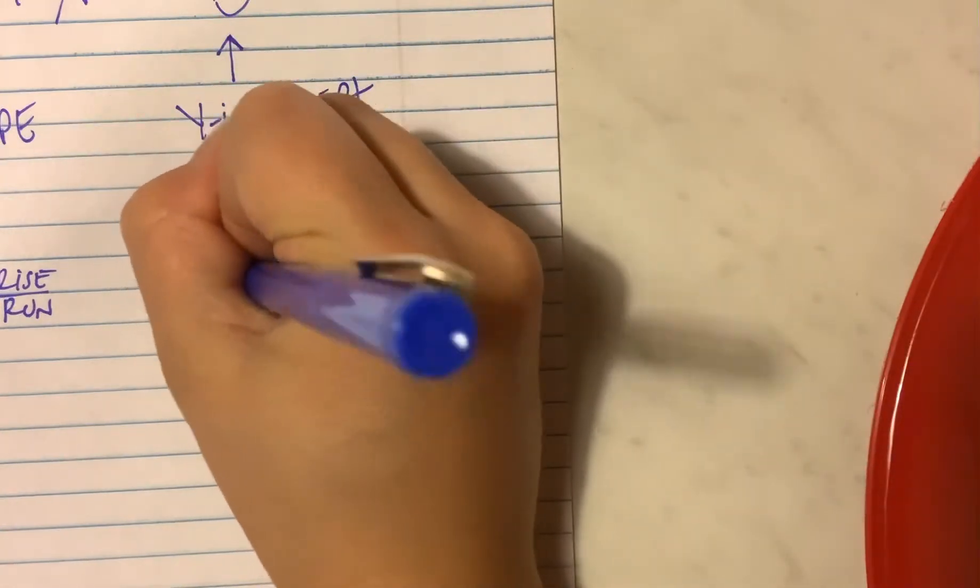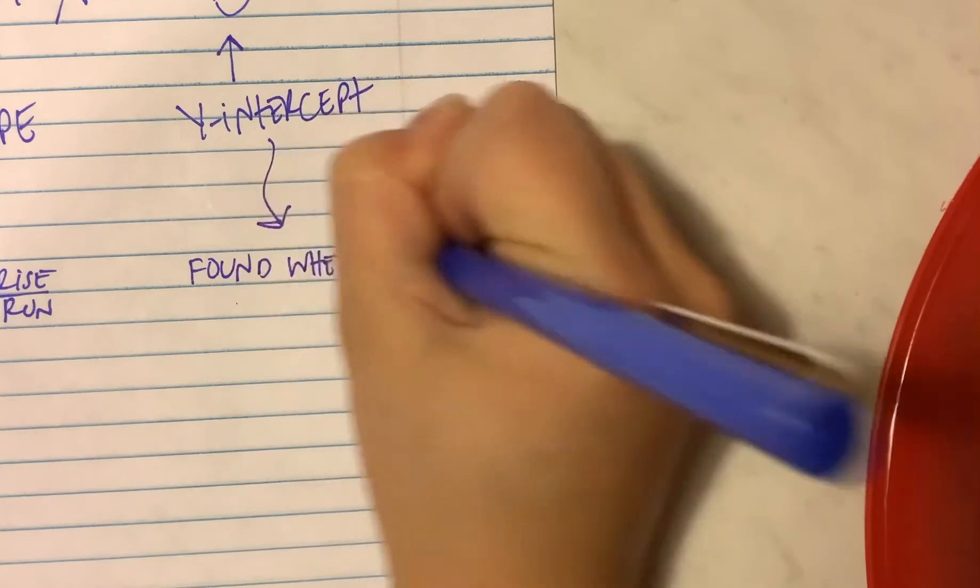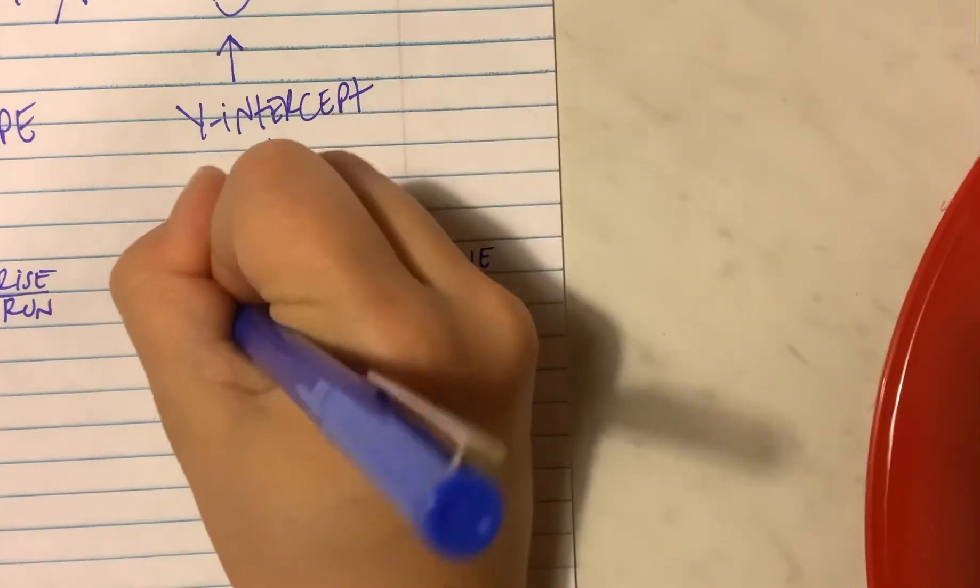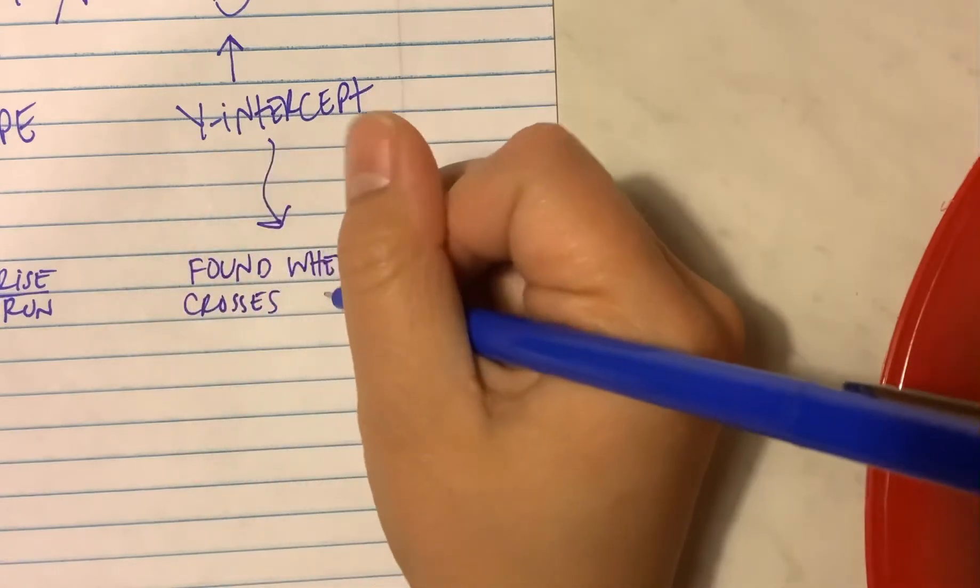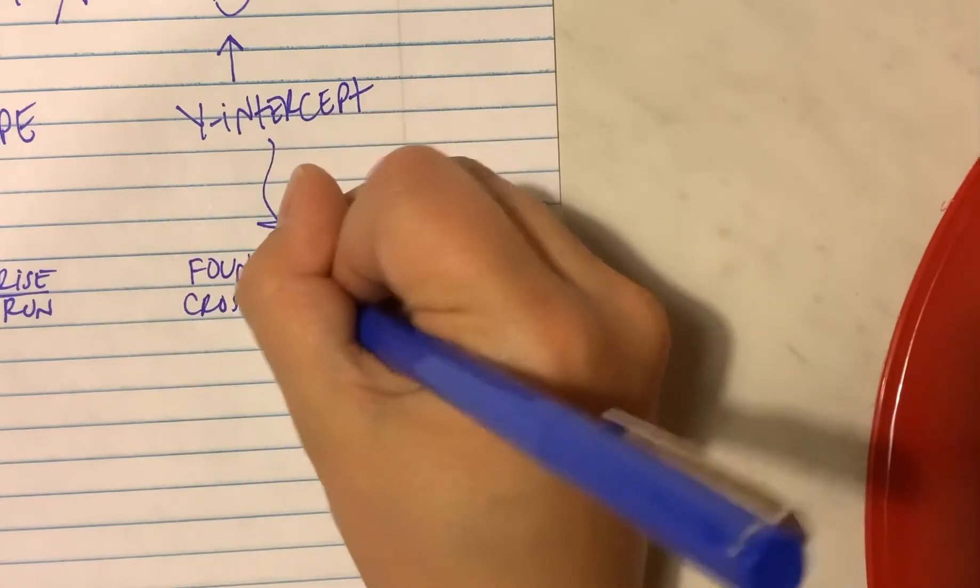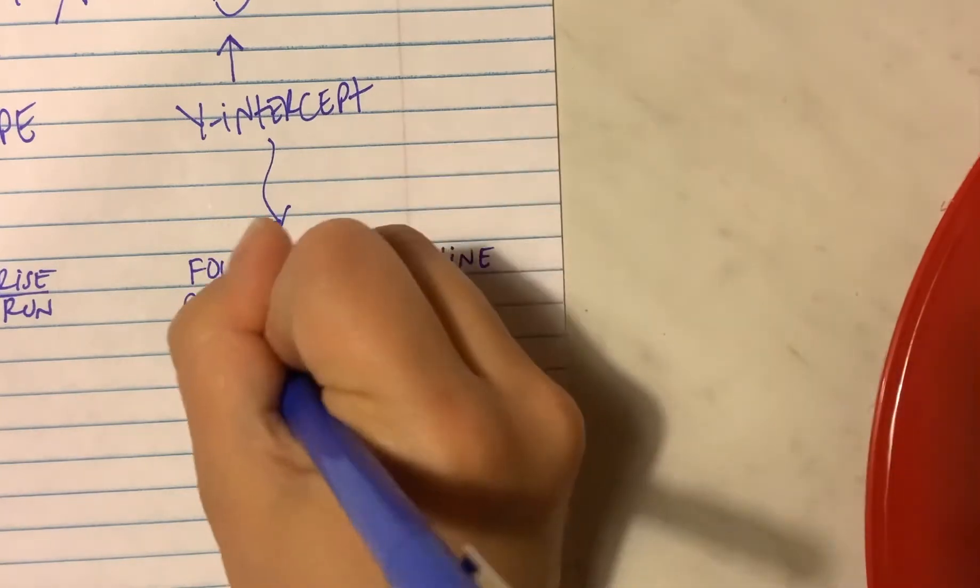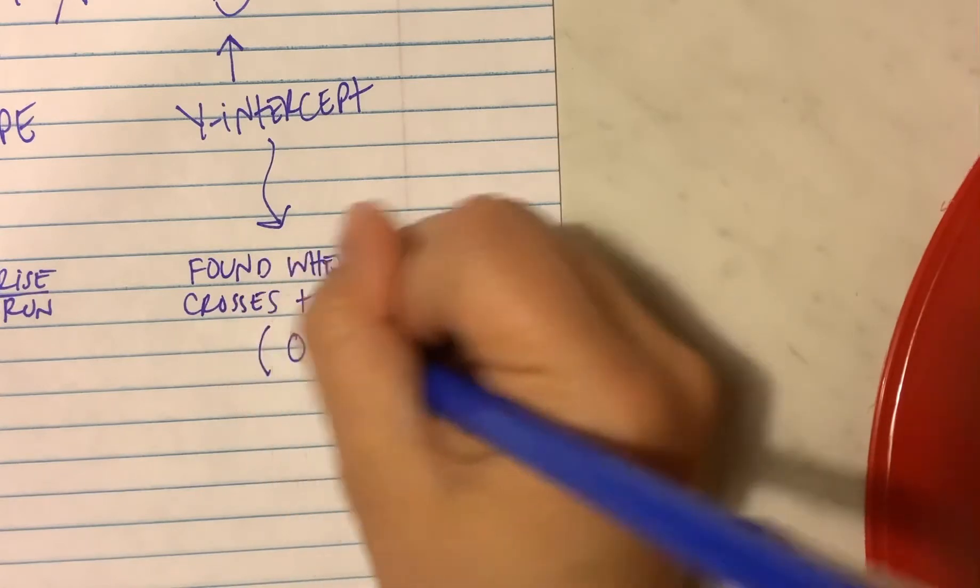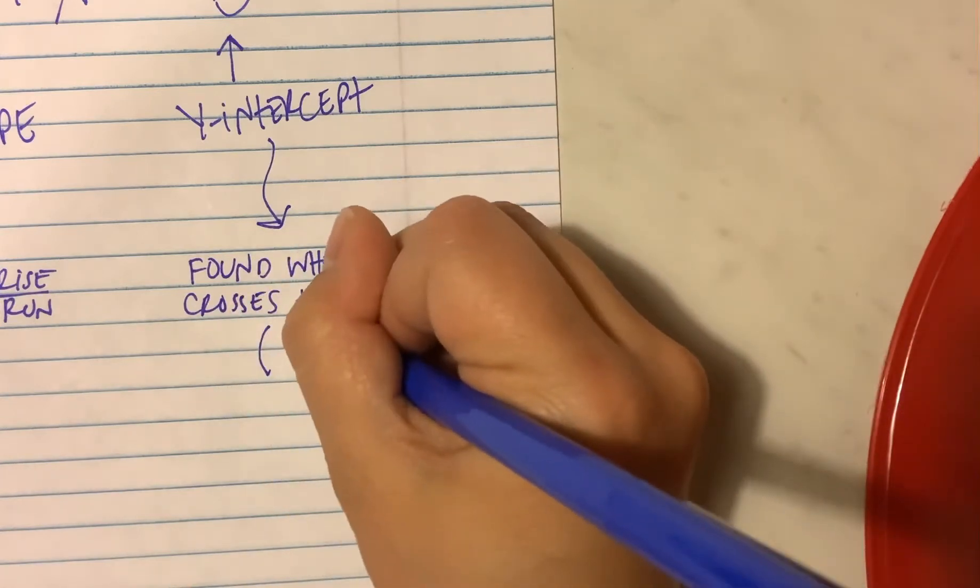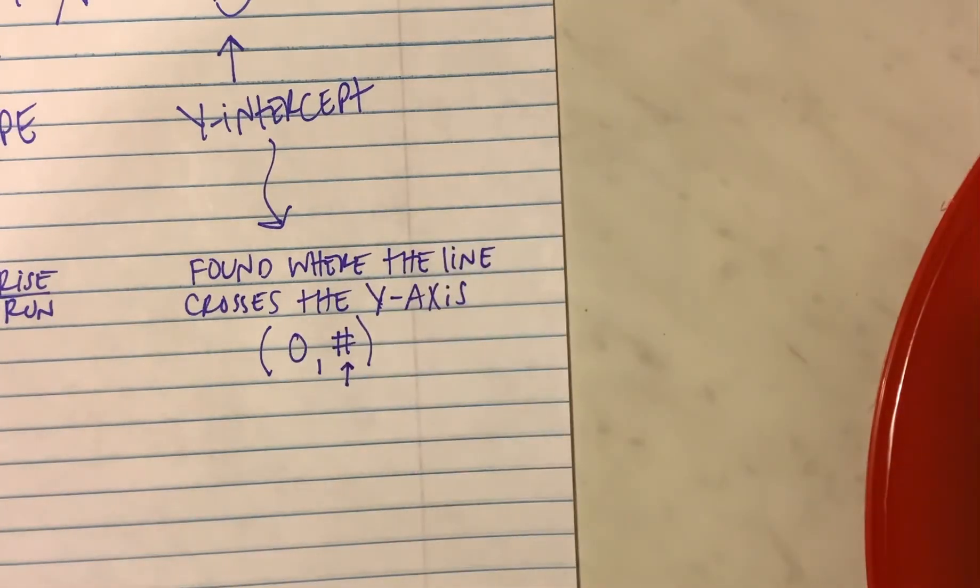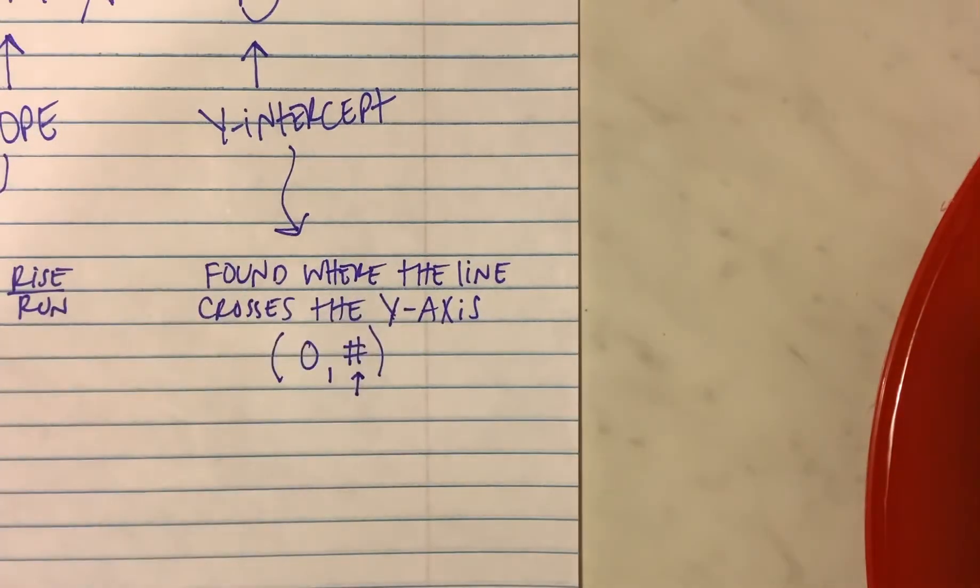The y-intercept is found where the line crosses the y-axis. It's also in a coordinate when 0 is in the x-spot, and whatever number is here is the y-intercept. That's a number symbol. I use it as a number symbol. Yes, it's a hashtag also.